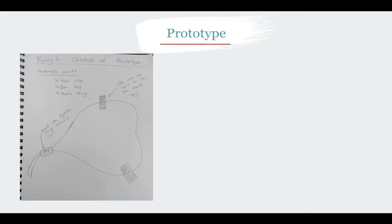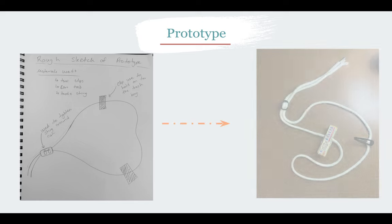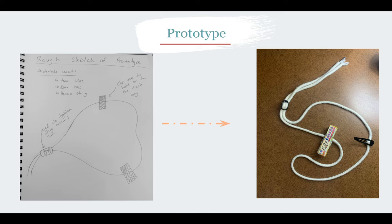For my prototype, I went with the first solution. I created a sketch for the prototype, which I then built as the actual prototype itself. The materials I used were two clips, a hoodie string, and a metal can tab. The hoodie string wraps around the trash bag and can keep it from slipping. The two clips are used to hold onto the trash bag so that the string is secure. The tab is used to hold the strings in a way that can be tightened or loosened.